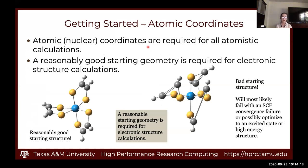Getting started with atomic coordinates: you have to know all of the elements and where the hydrogens are in space. You also need a good starting structure. If you don't have one, you will end up with either an SCF convergence failure, or you'll optimize to an excited state or some other high-energy structure not pertinent to the chemical system you're interested in.